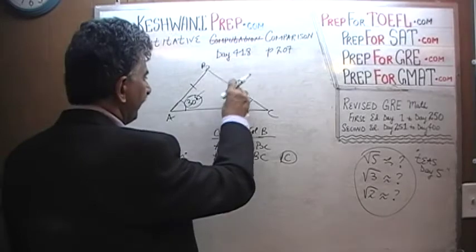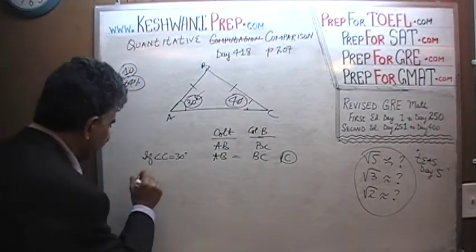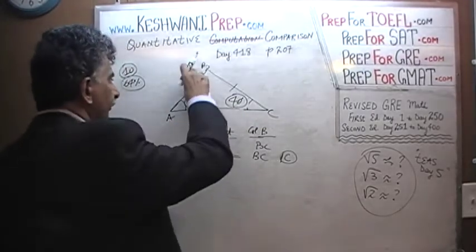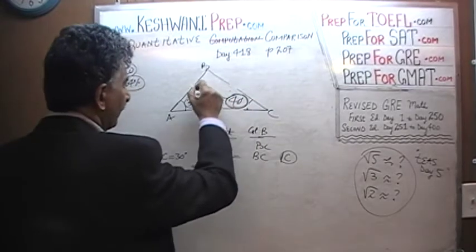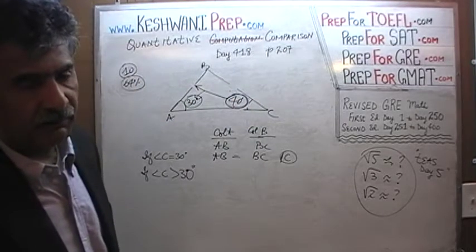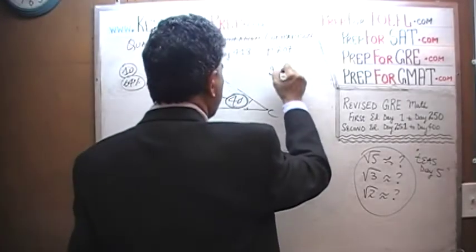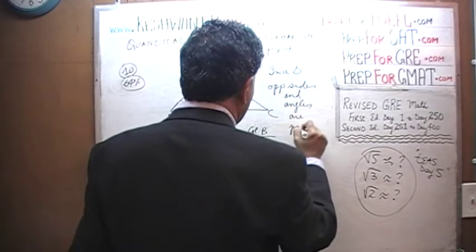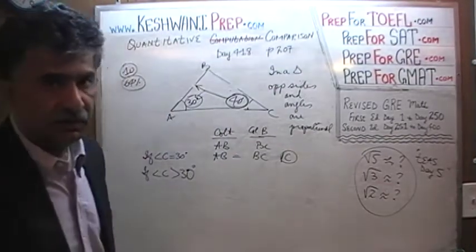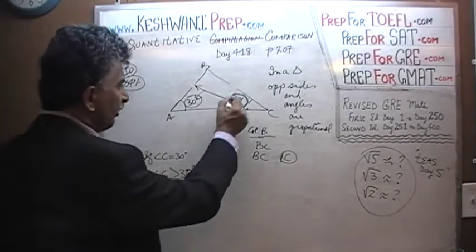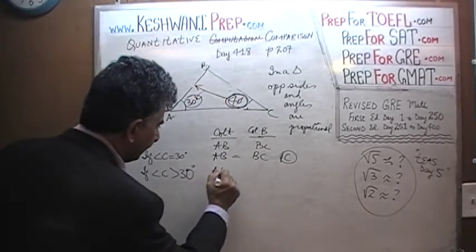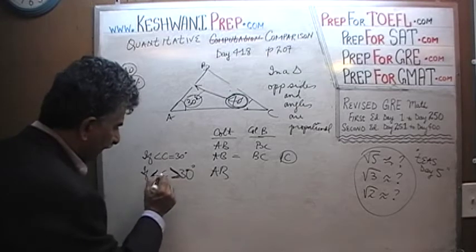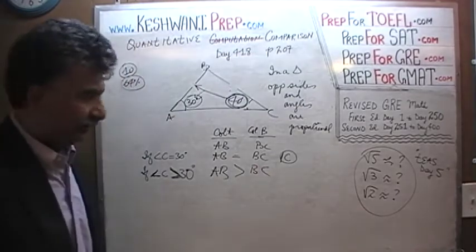On the other hand, if it turns out that angle C is more than 30 degrees — say 40 degrees — then we know that the larger angle will face a larger side. In a triangle, opposite sides and angles are proportional, meaning the largest side faces the largest angle and the smallest side faces the smallest angle. So if angle C is more than 30 degrees, then AB would be longer than BC, and the answer would be A.